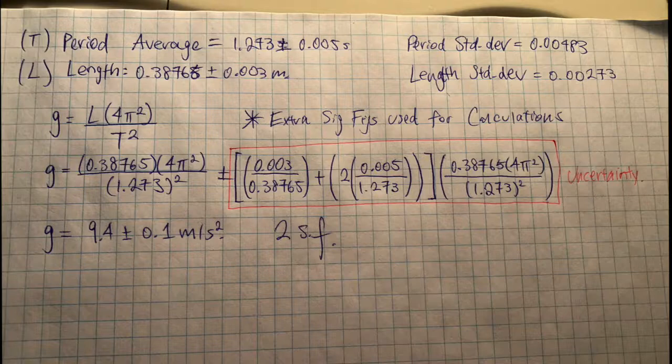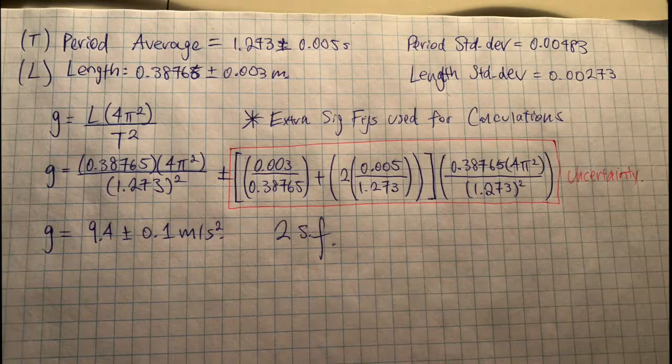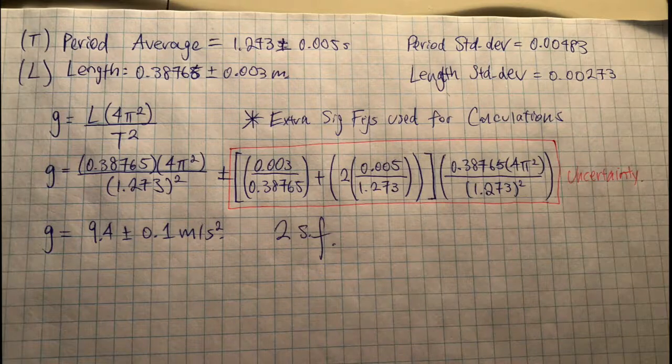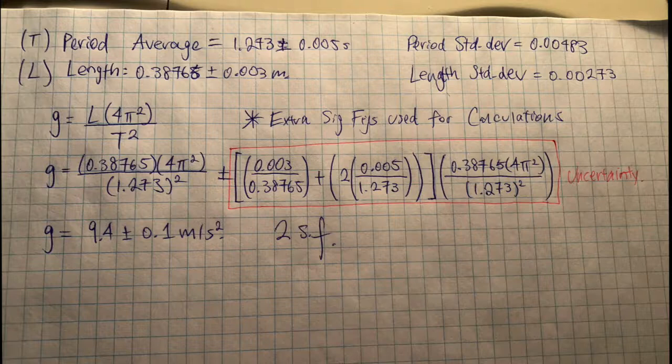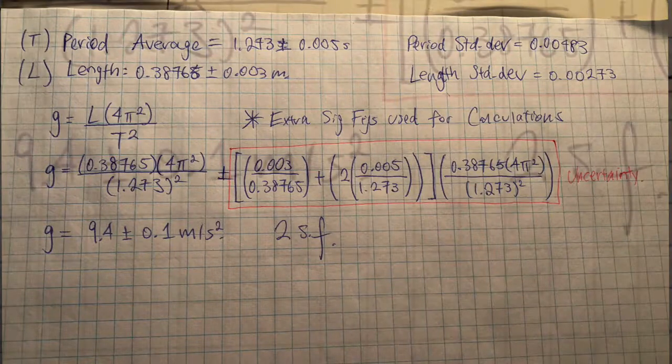Using these values, we calculated the percent uncertainties for length and period. For the period, we multiplied the percentage by 2 since it is squared in the formula. We then added these percent uncertainties to find the overall percent uncertainty. Multiplying this percentage by the value we found for gravity, we get the absolute uncertainty for our value.